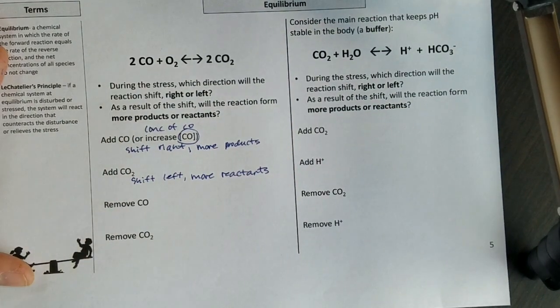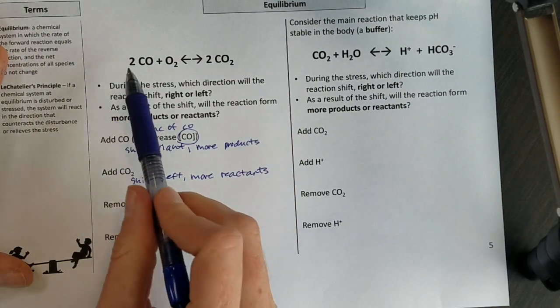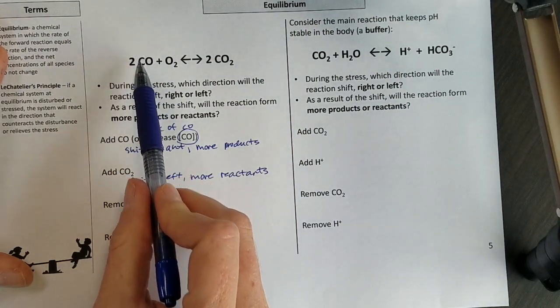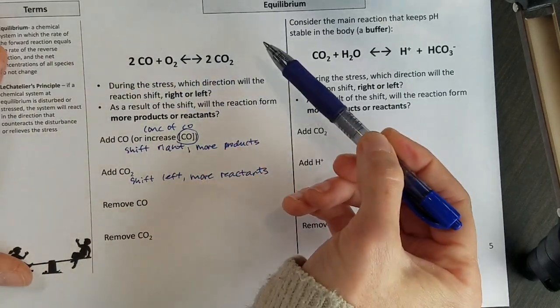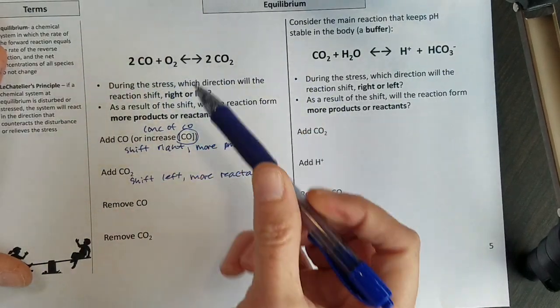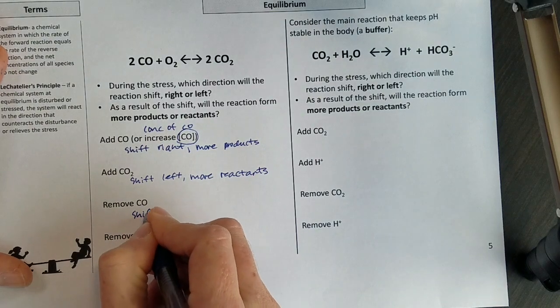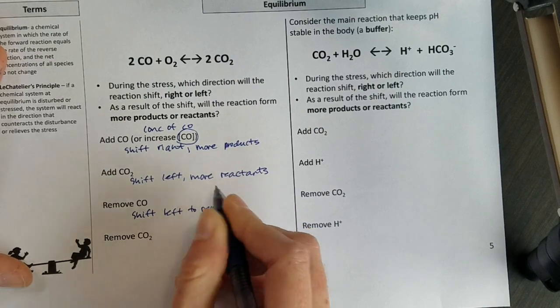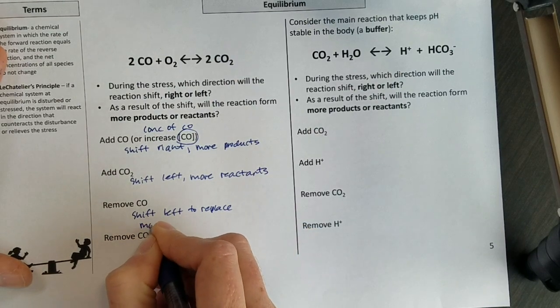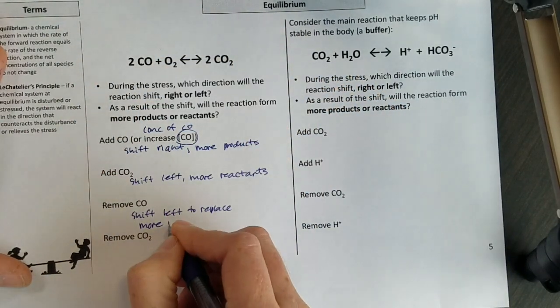Let's think about removal. That takes a little bit more thought. So if I remove CO, if I take the CO and remove a bunch of it, it's like when we lost sleep, we need to replace it. So if I lose this, I need to shift so I can replace it. I'm going to say I shift left to replace what I lost, and that gives me more reactants.